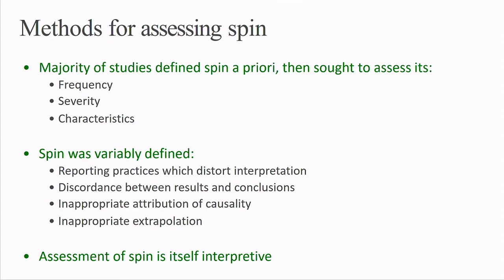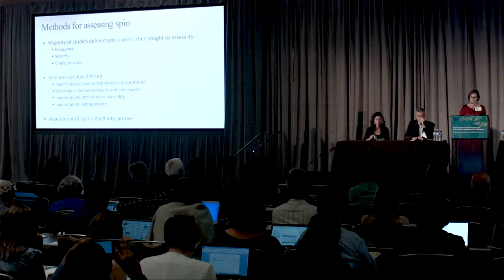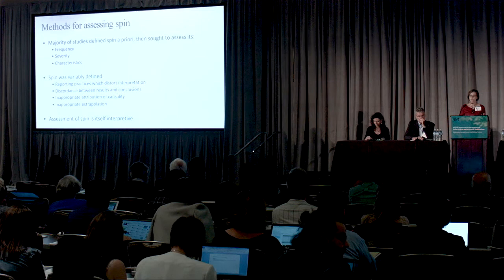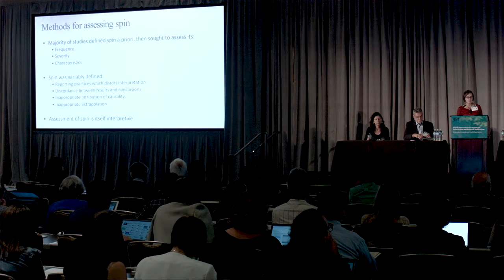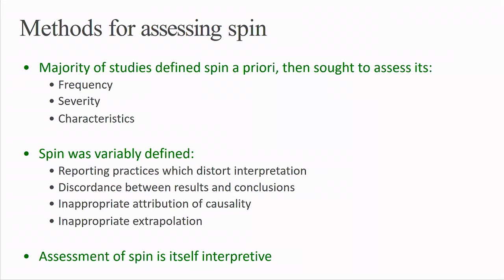Across our included reviews, SPIN was again variably defined, and we inductively classified these definitions into four main categories. First, the Boutron definition: reporting practices which distort the interpretation of results or create misleading conclusions suggesting a more favorable result. Second, studies defining SPIN specifically as discordance between results and conclusions. Third, for observational studies, SPIN could manifest as inappropriate attribution of causality. Fourth and most broadly, the over-interpretation or inappropriate extrapolation of results. A key challenge is that assessing SPIN is itself an exercise in interpretation, highly contextual, and poses significant methodological challenges.